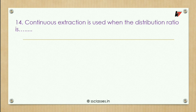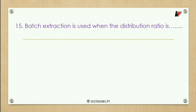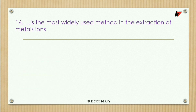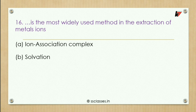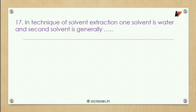Fourteenth question: continuous extraction is used when the distribution ratio is low. Fifteenth question: batch extraction is used when the distribution ratio is moderately high. Sixteenth question: which is the most widely used method in extraction of metal ions? Options: ion association complex, solvation, chelate formation, or synergistic extraction. The correct answer is chelate formation.